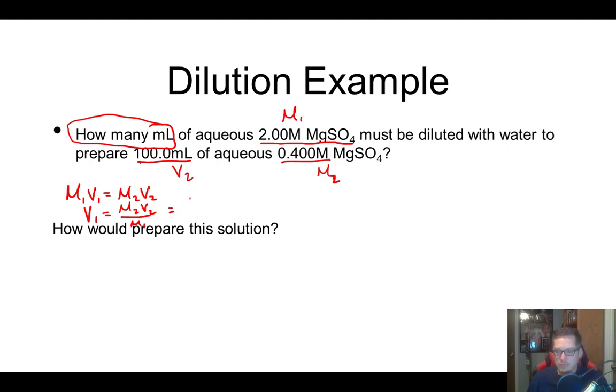And then just simply plug everything in. So M2 was 0.4, and V2 was 100. And remember, I can leave that as milliliters. I just have to remember that this volume that spits out the other side would also be in milliliters. And then M1 would be the concentration of my stock solution, so that would be my 2 molar. So I take 0.4 times 100, which gives me 40 divided by 2. So you get 20.0 milliliters. So this volume here, that's how many milliliters of the stock solution you need to make this solution.